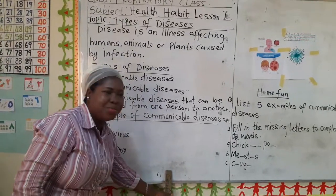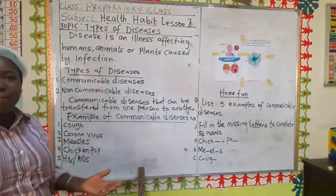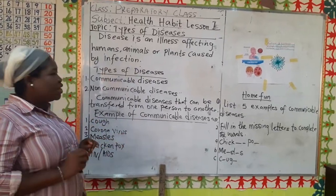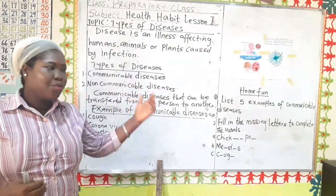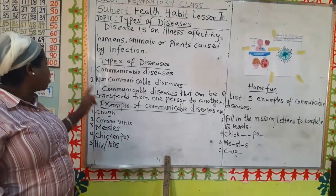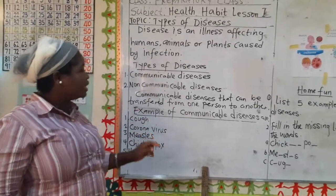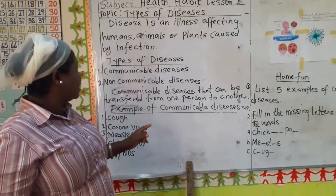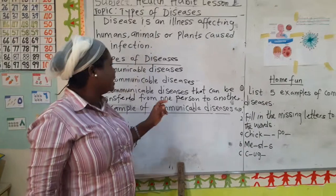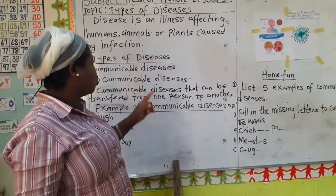What do we understand by communicable? We communicate with our fellow classmates at home, with mommies and daddies, we talk to one another in home, school, and public places. Communicable diseases are diseases that can be transferred from one person to another.